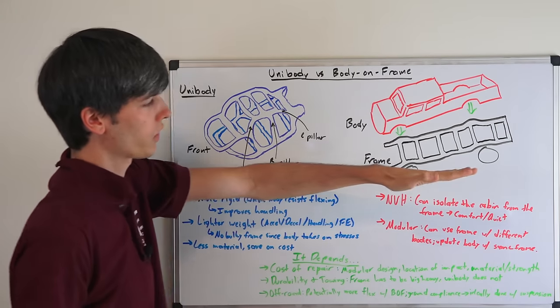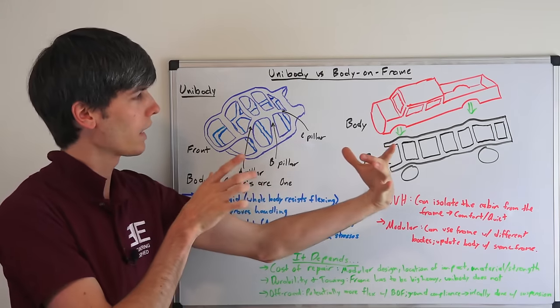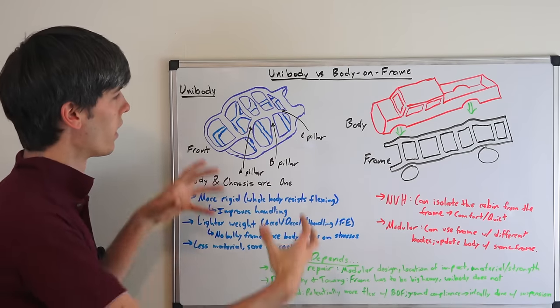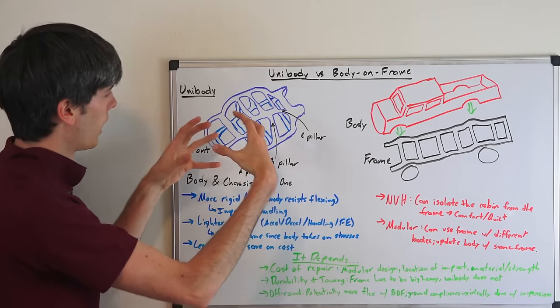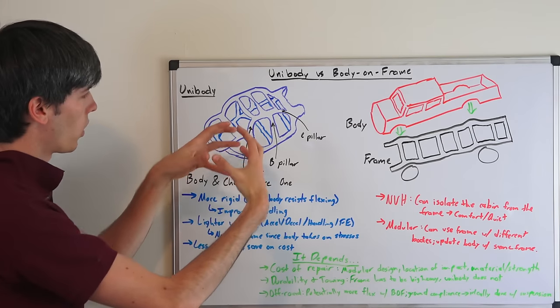Whereas with body on frame you're going to have more flex in this because you've essentially got like a ladder, a flat plane which can twist and bend, rather than the structural unibody which can help resist all of that flexing.